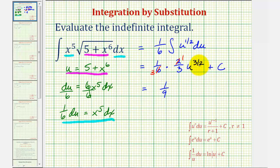But remember u is equal to five plus x to the sixth, so the quantity five plus x to the sixth raised to the three-halves power plus c. And this would be our antiderivative using u substitution.